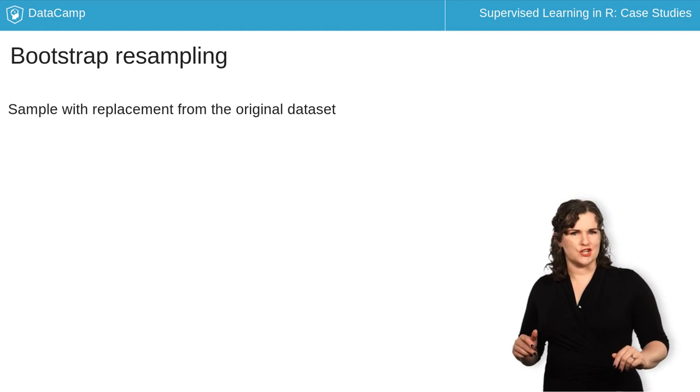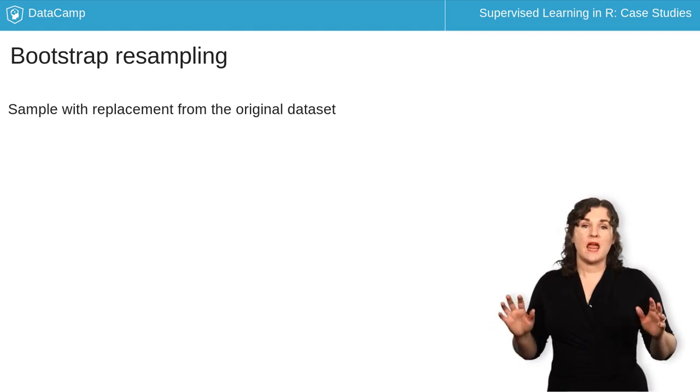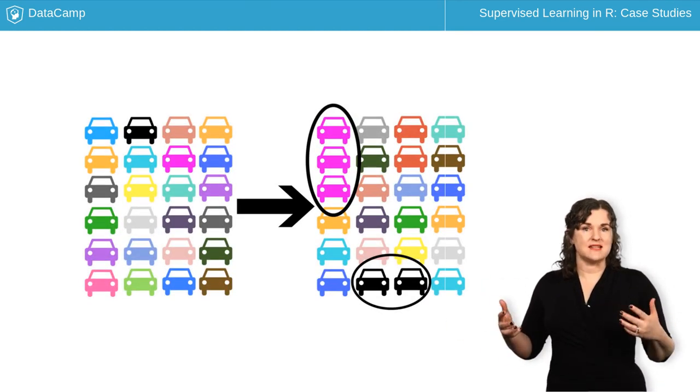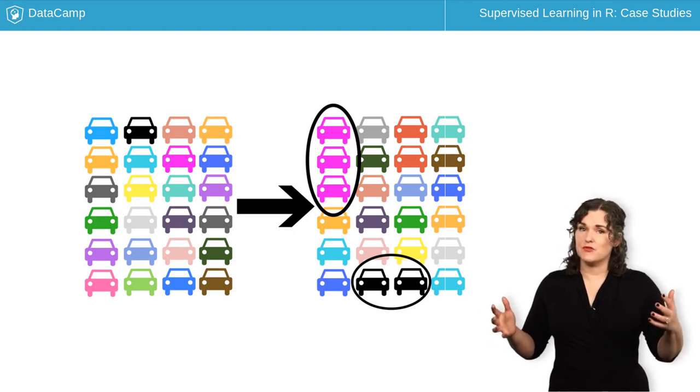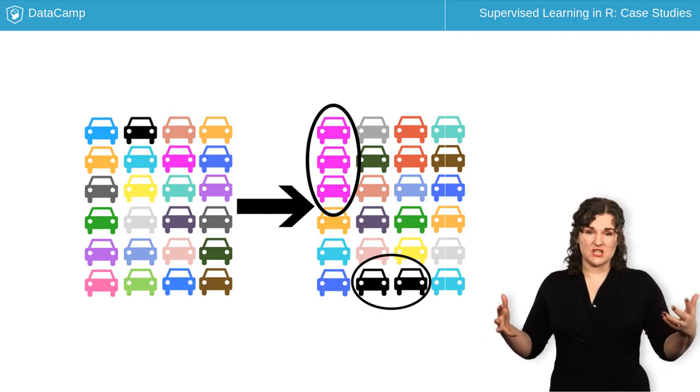Let's think about cars. Let's say our training dataset has 900 cars in it. To make a bootstrap resample, we draw with replacement 900 times from that training set to get the same size sample that we started with.